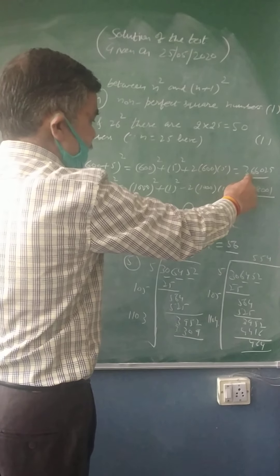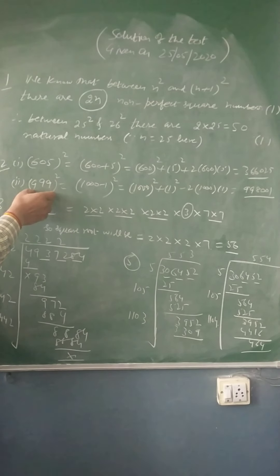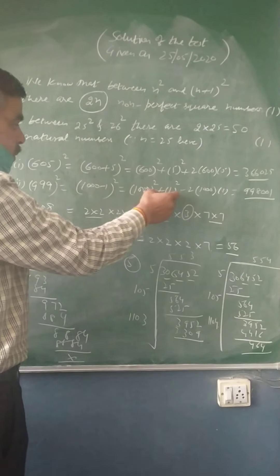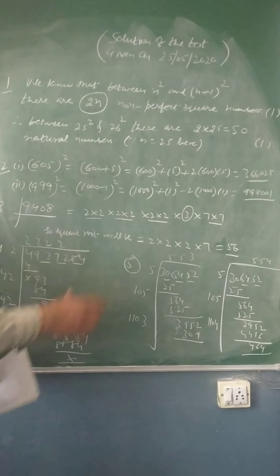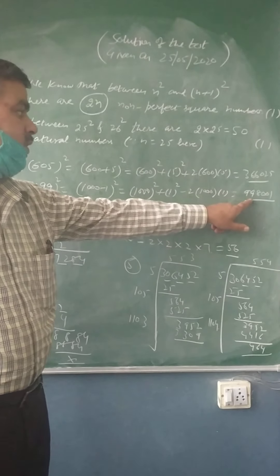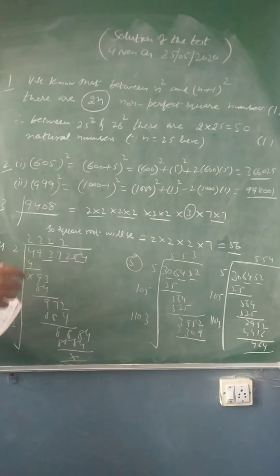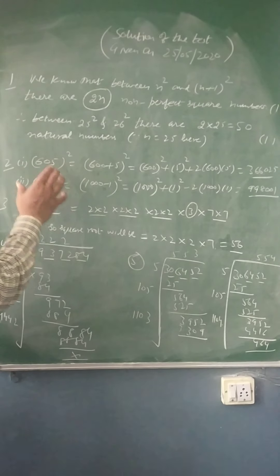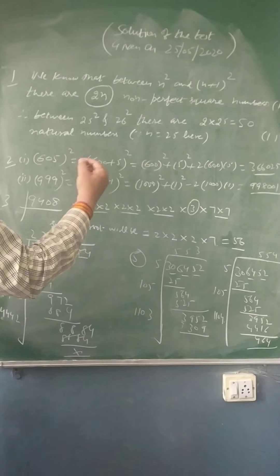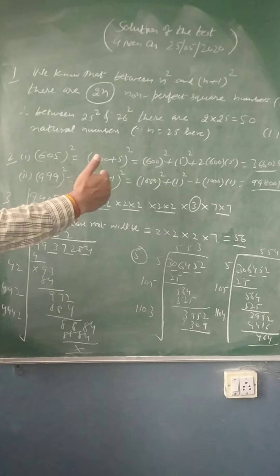The answer for 605² is 3,66,025. For the second part, 999 is closest to 1000, so you express it as (1000 − 1)². Now applying the identity a² + b² − 2ab, your answer is 9,98,001. Both parts were of 1.5 marks each. Half a mark for correctly writing the identity and 1 mark for the calculation, so this question carries 3 marks in total.